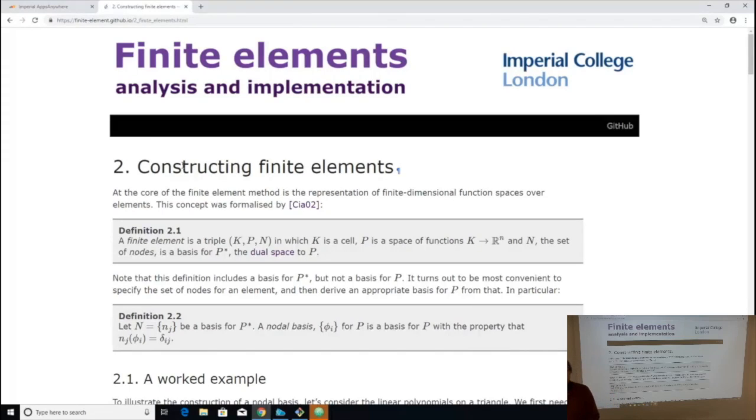And a node is a function in the dual space of the finite element space. So what does that mean? Well, functions in the finite element space, and in particular the basis functions in the finite element space, are functions from the reference element to, in this case, the reals. So you give me a point that's somewhere in the reference element, and it gives you back a number.